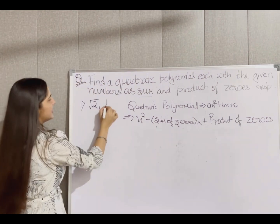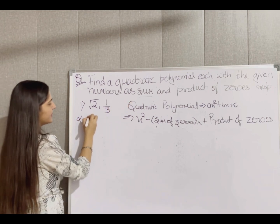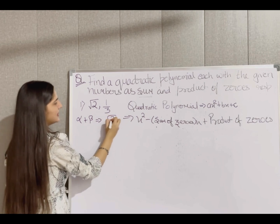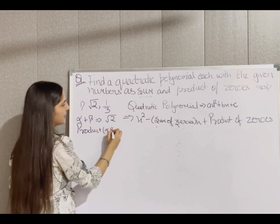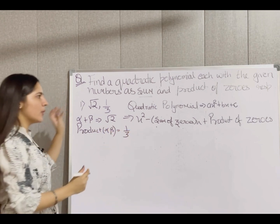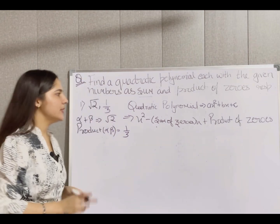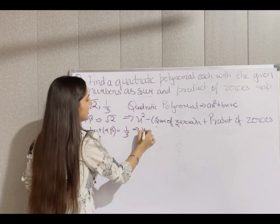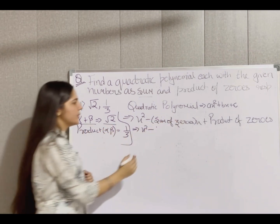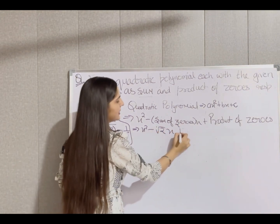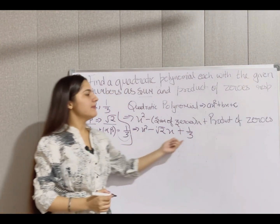Now for the second part: sum of zeros is √2 and product of zeros is 1/3. Using the formula, we get x² minus √2·x plus 1/3.